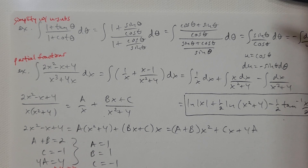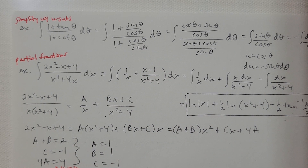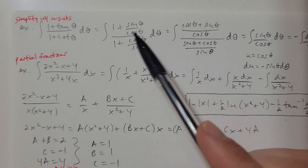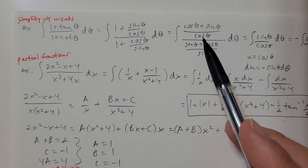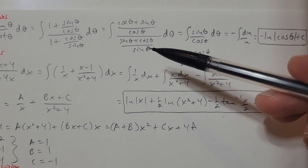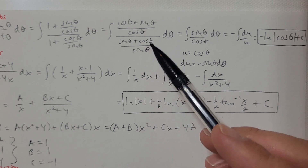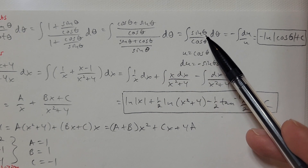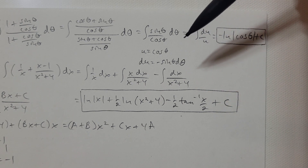The first thing I'm going to do is switch everything to sines and cosines. Tangent theta is sine theta over cosine theta, and cotangent theta is cosine theta over sine theta. Then I'll get a single fraction on top and a single fraction on the bottom — 1 is the same as cosine theta over cosine theta on top, and sine theta over sine theta on the bottom. Now I'm dividing by a fraction, so the rule is to flip the denominator and multiply.